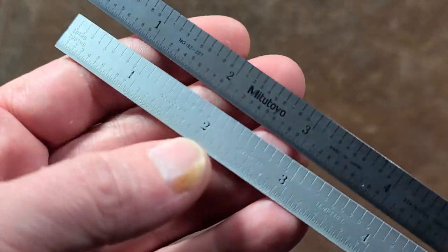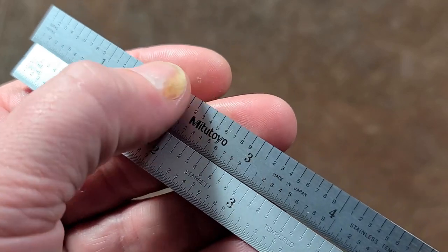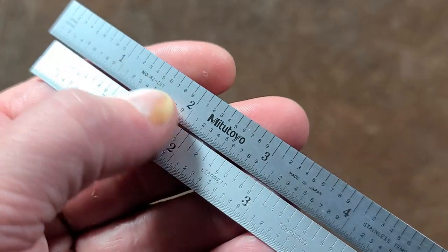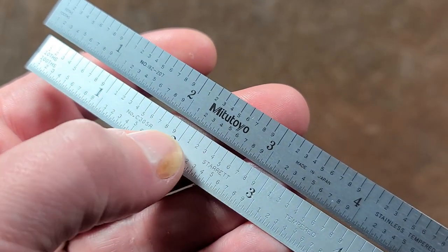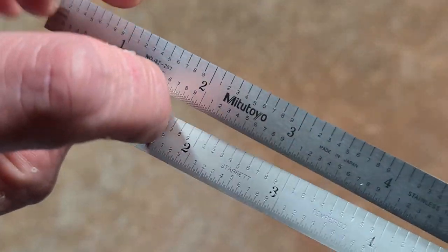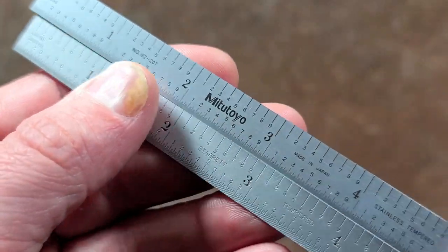The Starrett has really deeper embossing. Actually, I'm not entirely sure if the Mitutoyo is embossed or if these are laser etched. They feel like they're embossed, but it's certainly not as deep as the Starrett. You can just really feel that, and that's what I do like about the Starrett.